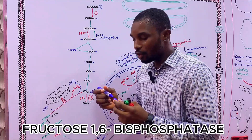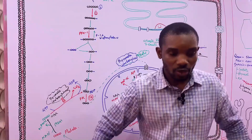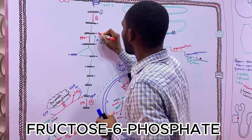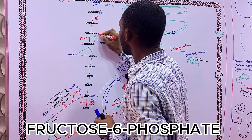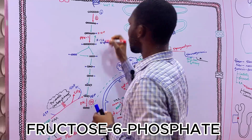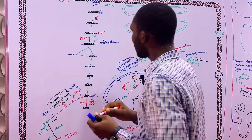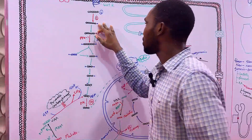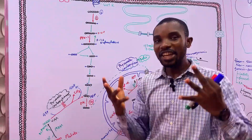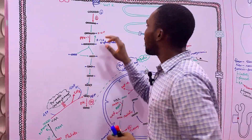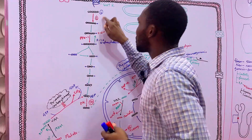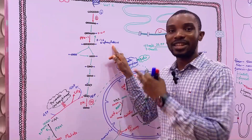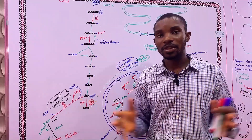To bypass the second roadblock, the enzyme fructose-1,6-bisphosphatase comes into play. It takes fructose-1,6-bisphosphate and removes a phosphate to form fructose-6-phosphate. Fructose-6-phosphate can then be converted to glucose-6-phosphate, as that reaction is reversible.